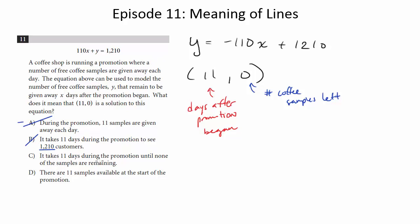It takes 11 days during the promotion until none of the samples are remaining. Yes, it's exactly what we said. 11 days after the promotion, we are out of samples. So that looks good. There are 11 samples available at the start of the promotion. No, that would be like if you sort of flipped it, I guess. Anyway, the best choice here is C.